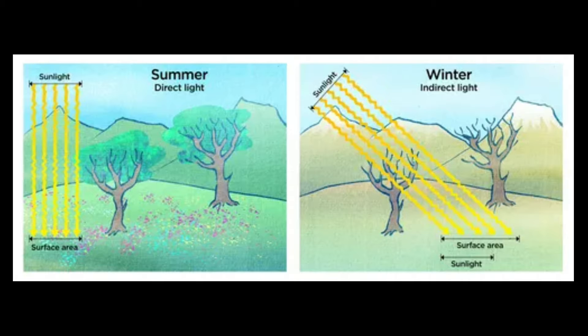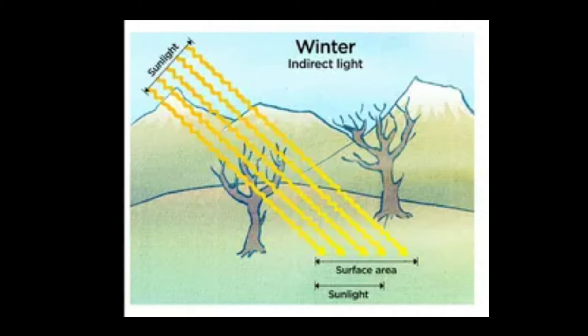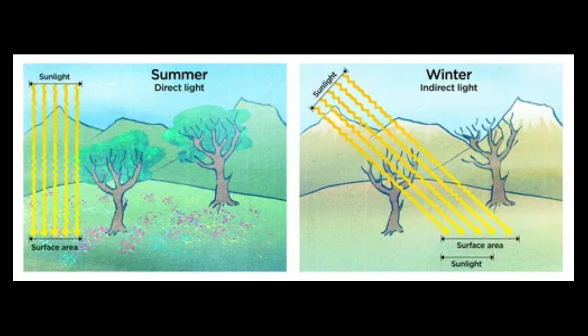Kapag winter naman, mababa lang ang sikat ng araw. We can say that the sun is lower in the sky because its rays strike the Earth at an angle — ito yung tinatawag nating indirect sun rays. They are more diffused and cover a broader surface area. Dito makikita natin yung figure na nag-i-illustrate ng direct and indirect sun rays. Kapag during summer, ito yung direct light — direct ang tumatama yung sikat ng araw sa isang lugar. But if it is winter, ito yung tinatawag naman nating indirect light.